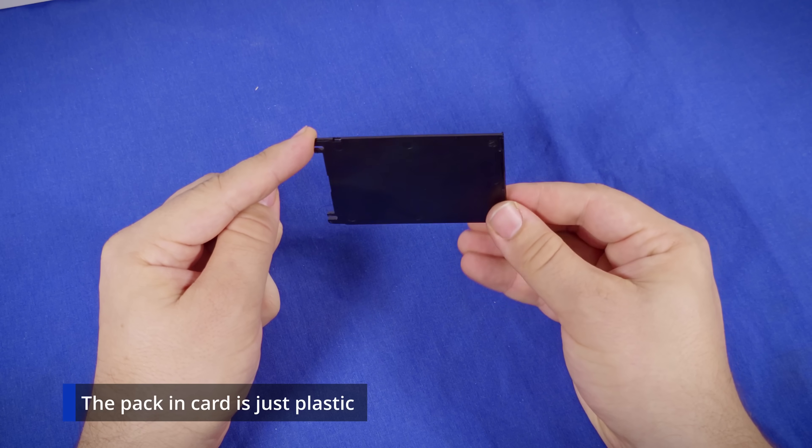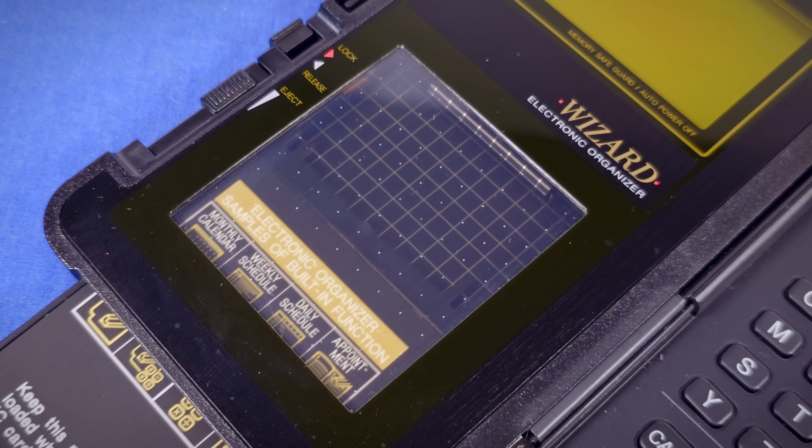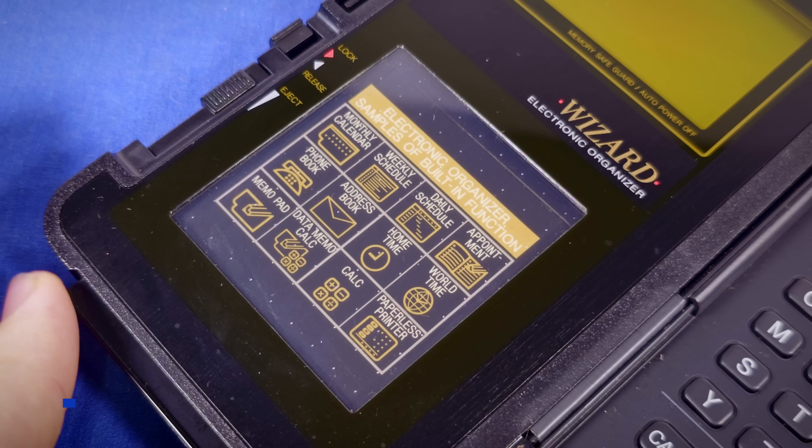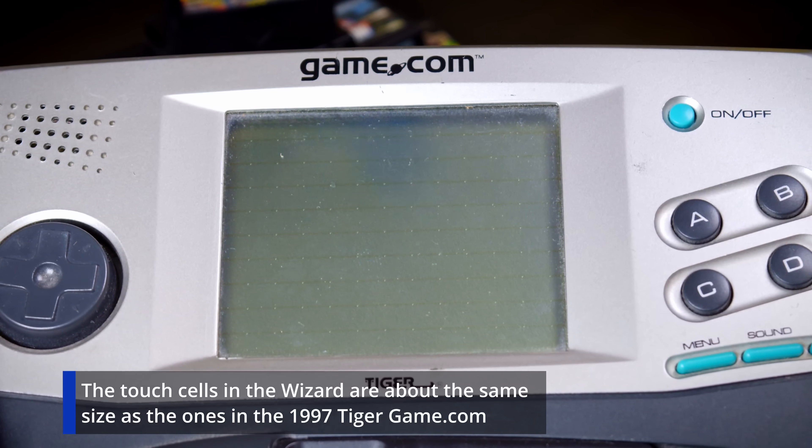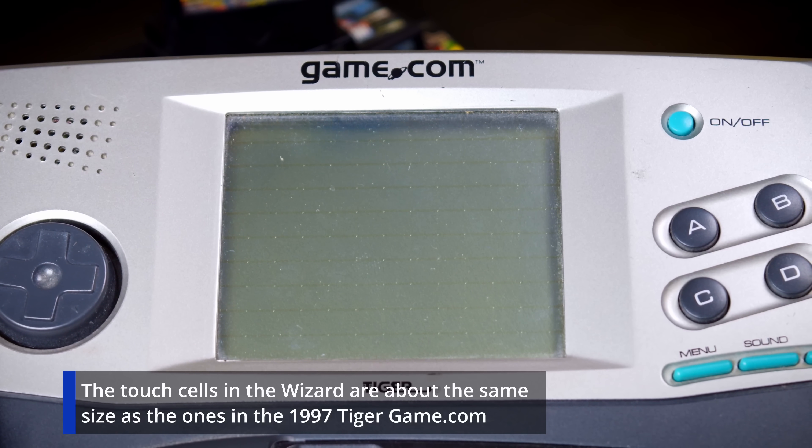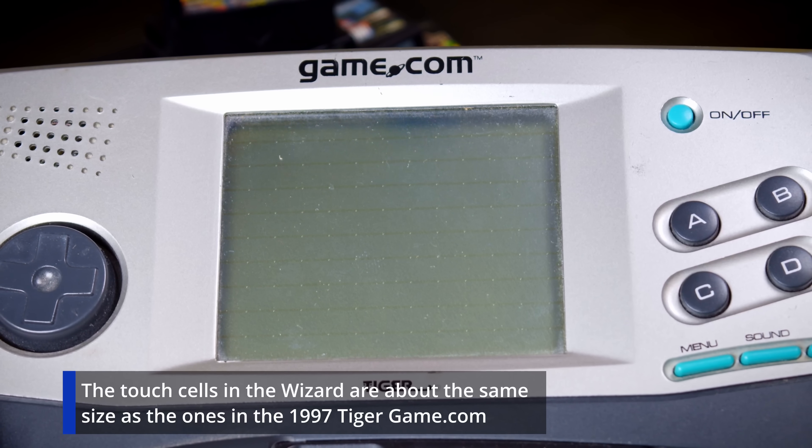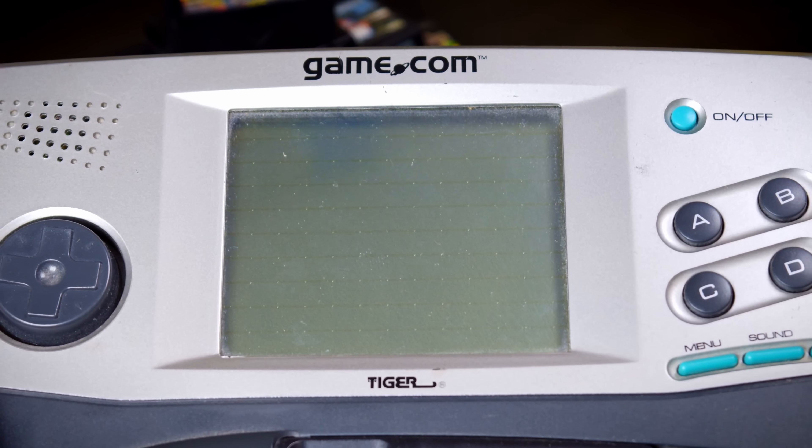These cartridges are why I want to start with this device. They slide behind a clear window that has touch sensors on it that allow the cartridges to add additional buttons to the device. This is the exact same technology as a touchscreen, but there isn't a display behind it, and the touch cells are very large.